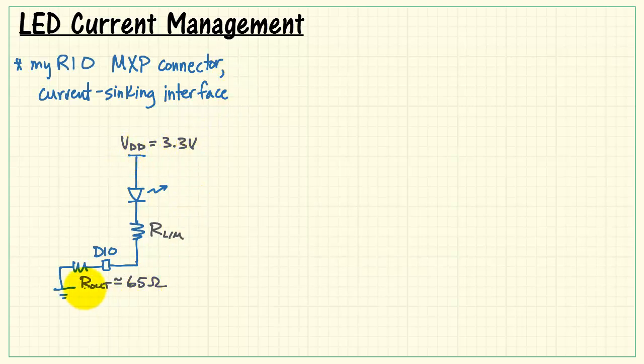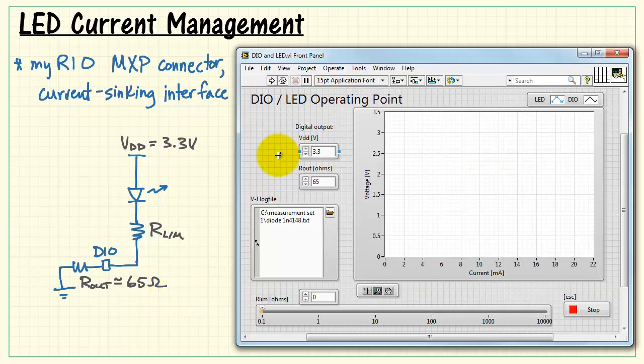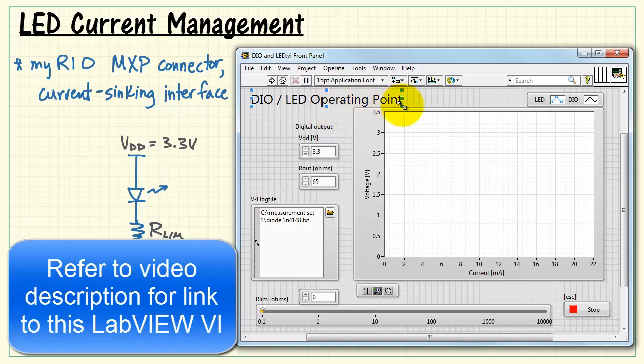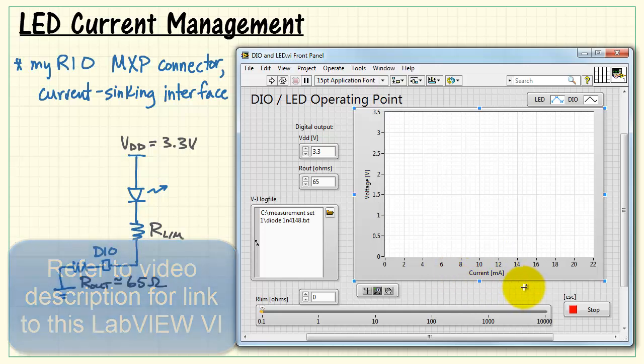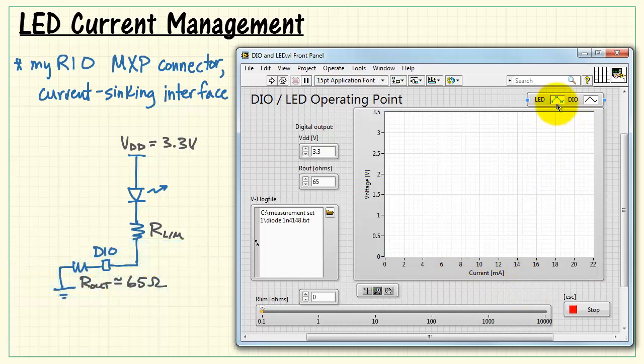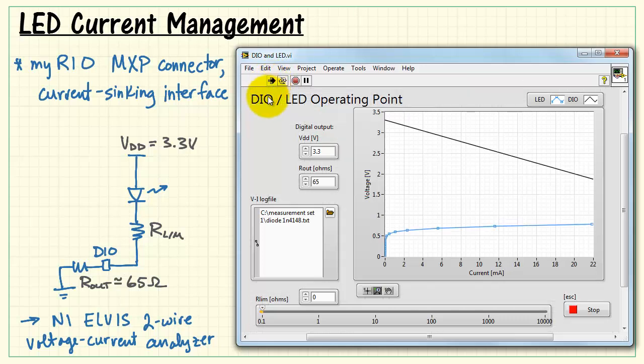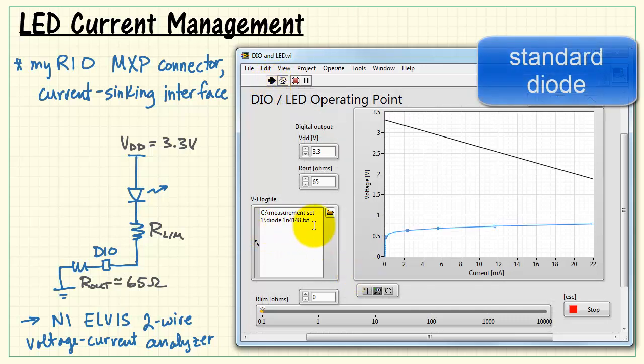Now let's take a look at some specific examples based on the 3.3 volt supply and 65 ohm output resistance. This VI is used to plot the voltage-current characteristic of the MyRIO output as well as over-plotting a variety of LED voltage-current characteristics. Here is where I can enter my two important values of supply voltage and output resistance. And I can select a text file that was based on measurements from the NI-ELVIS two-wire voltage-current analyzer.